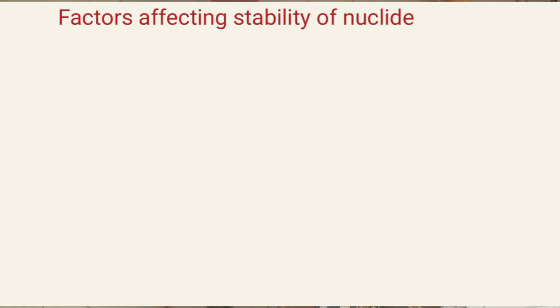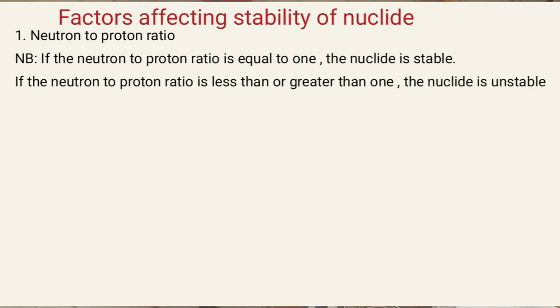You need to know the factors that affect stability of a nuclide. Mainly, there are three factors. Factor number one is the neutron-to-proton ratio. If the neutron-to-proton ratio is equal to one, then the nuclide is stable and will not undergo radioactive decay. But if the ratio is less than or greater than one, the nuclide is unstable and is likely to undergo radioactive decay.